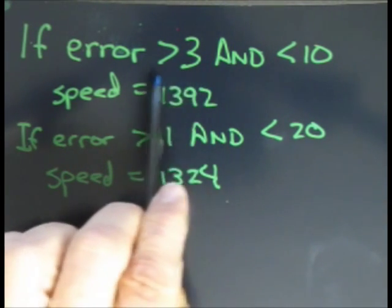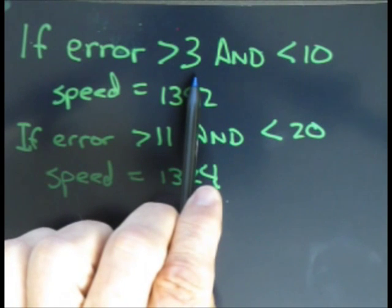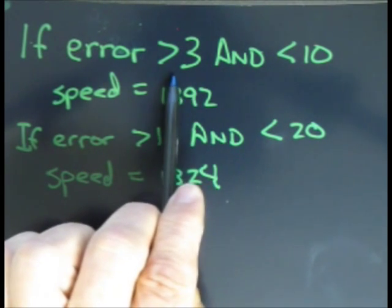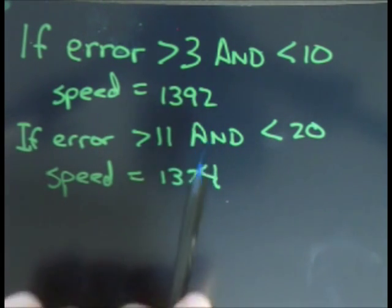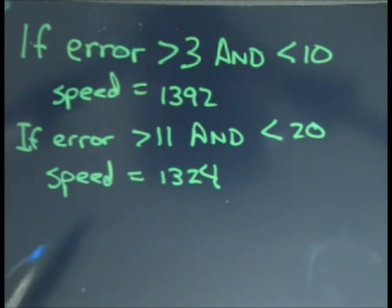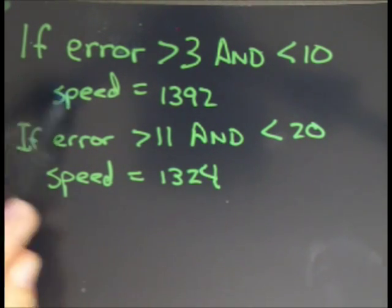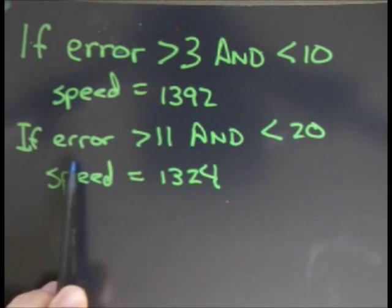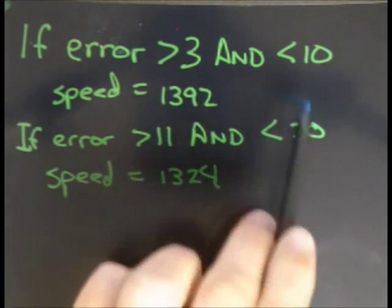The reason I start with 3 is because the values between 3 and negative 3 are the dead band—the area where the motor is close enough to the value that I want it to stop. If the error value is greater than 3 and less than 10,